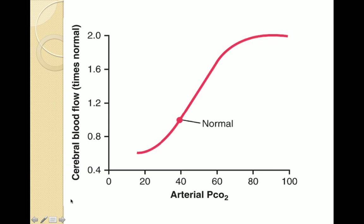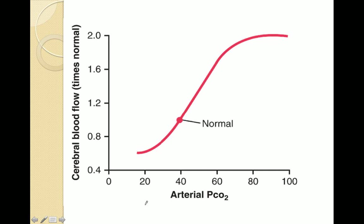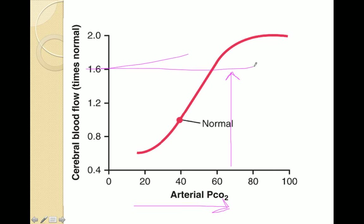This is a graph showing the CO2 and cerebral blood flow relationship. As CO2 increases, the vasculature will vasodilate to increase cerebral blood flow. The same is true for hydrogen ion concentration — as you increase your hydrogen ion concentration, the vasculature will vasodilate to increase cerebral blood flow.